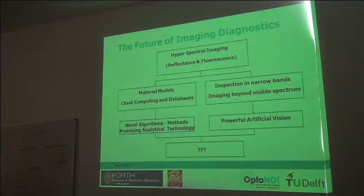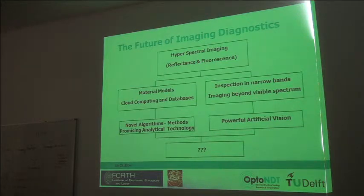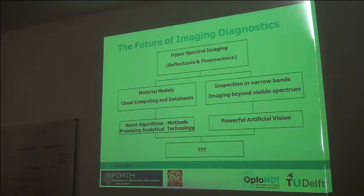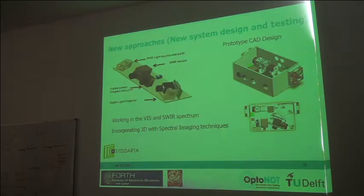What is the future of spectral imaging? We can focus in two directions. One is material models, cloud computing, and databases of existing and normal pigments, combined with novel algorithms and methods as a very promising analytical technology. On the other hand, we can inspect in even narrower bands, increasing contrast between specific features or pigments in real time. By performing artificial intelligence techniques on samples, we can map and model changes in specific areas of interest. The combination of these directions will lead to something new.